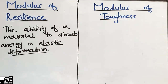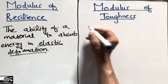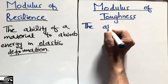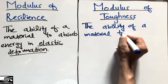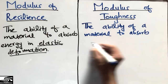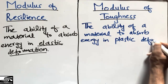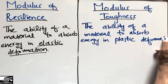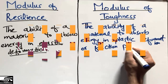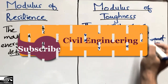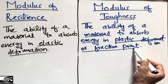The modulus of toughness is a little bit different from the modulus of resilience. Here we define it as the ability of a material to absorb energy in plastic deformation, or up to the fracture point.